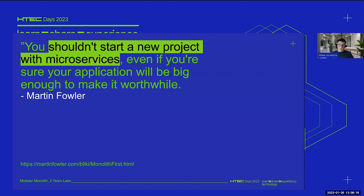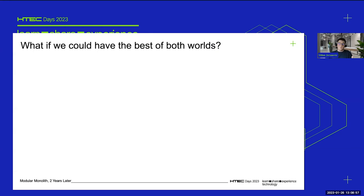I'm going to read a quote by Martin Fowler — you may have heard of him. He says you shouldn't start a new project with microservices even if you're sure your application will be big enough to make it worthwhile. To summarize a few more of his points: all the good projects that end up using microservices started out as monoliths, and all the projects that started out as microservices usually didn't turn out so well. So what if we could have the best of both worlds?